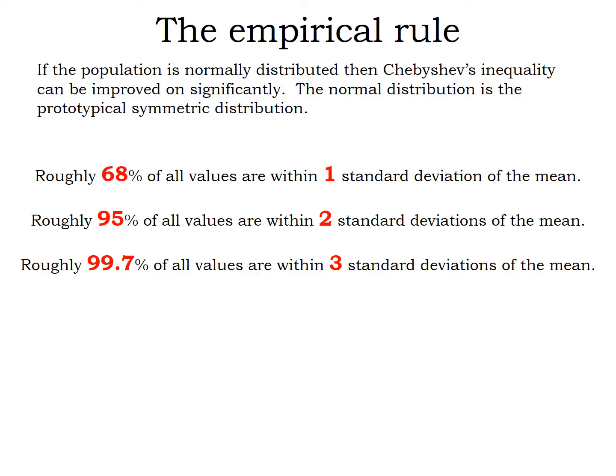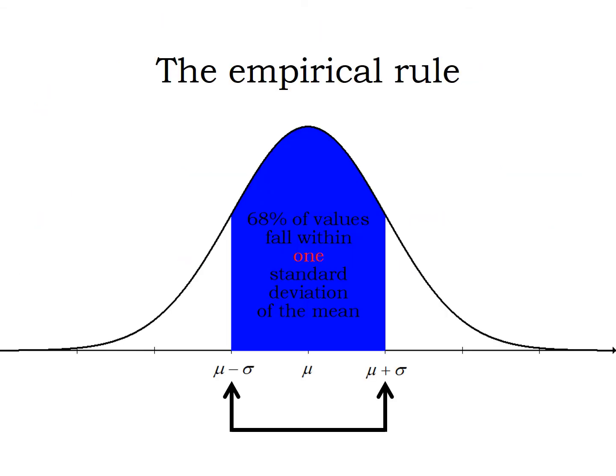If we start at the mean μ and go forward and backward one σ, so add σ and subtract σ from the mean, the empirical rule says 68% of the values will fall within that one standard deviation of the mean.